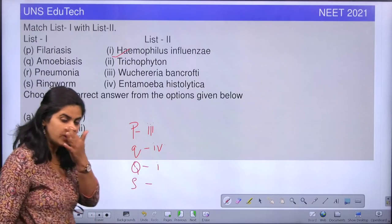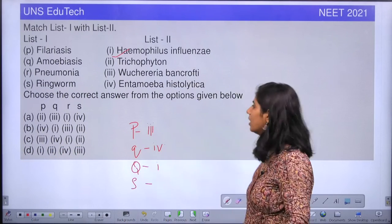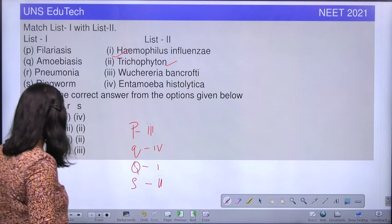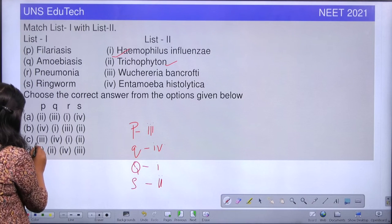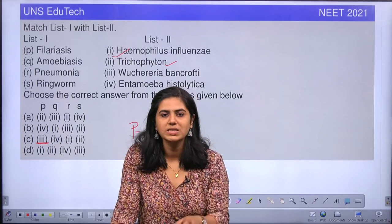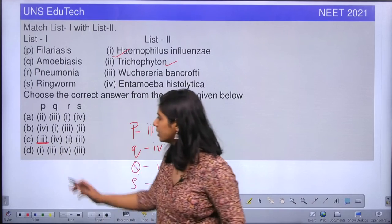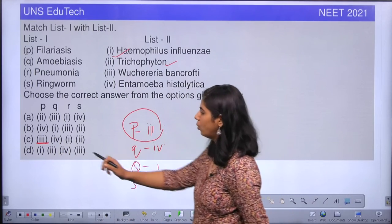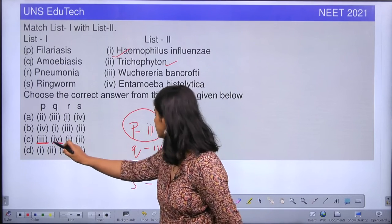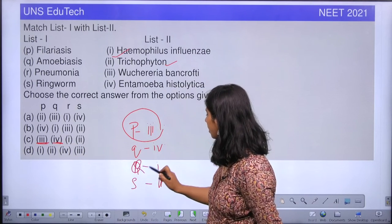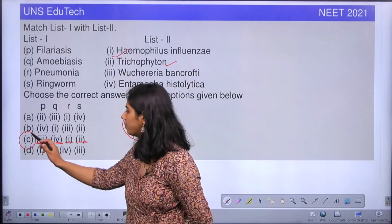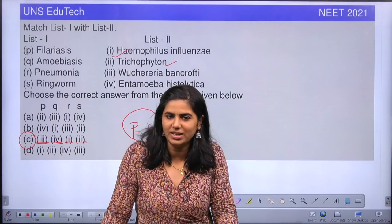Finally, option S is ringworm, which is caused by the fungus Trichophyton, which is option 2. So S matches with 2. Our final answer is P-3, Q-4, R-1, S-2. In match-the-following questions, if you know any two answers, you can easily guess the others. The correct option here is option C. Hope you got the concept — happy learning, see you in the next class.